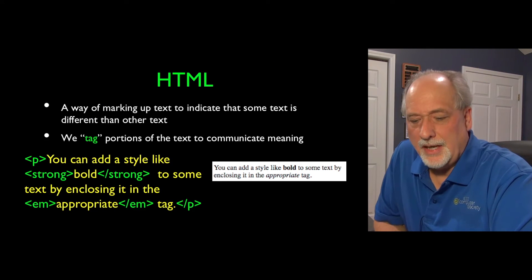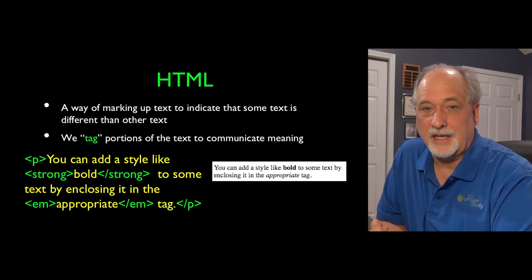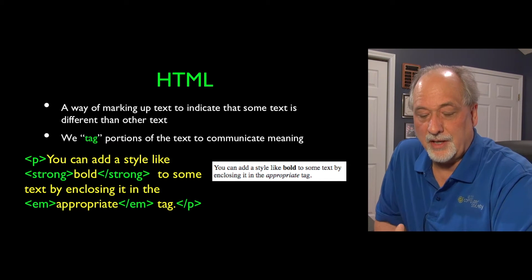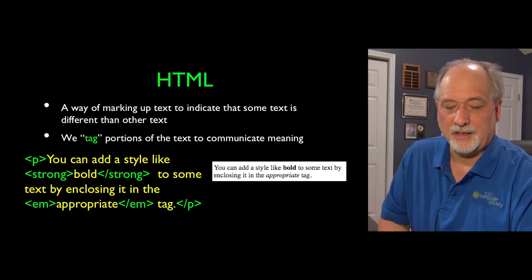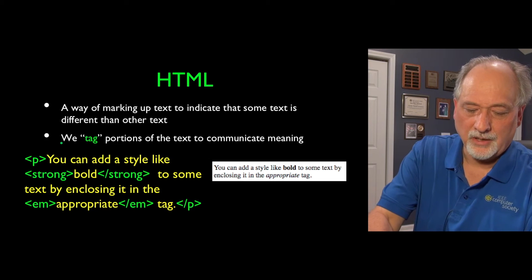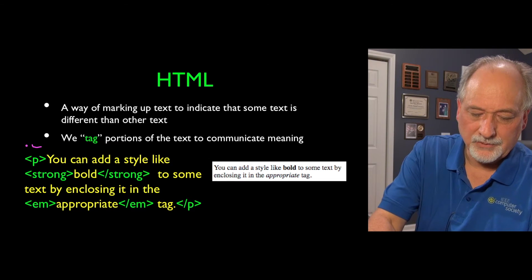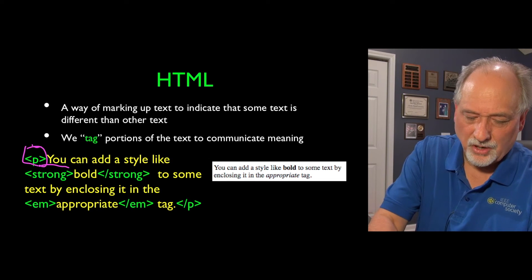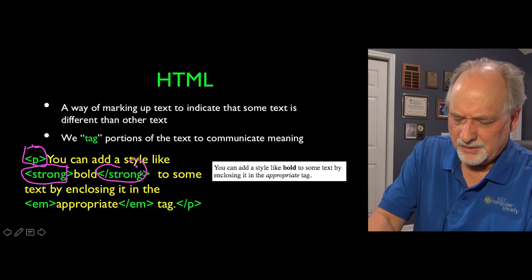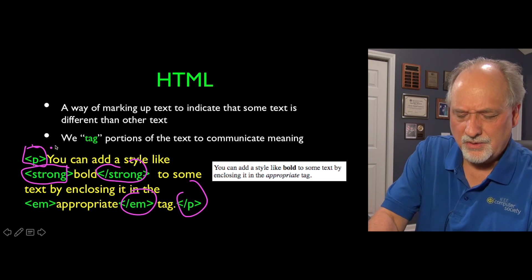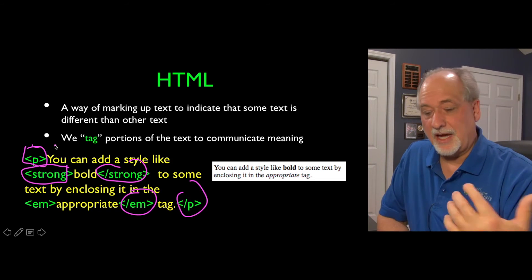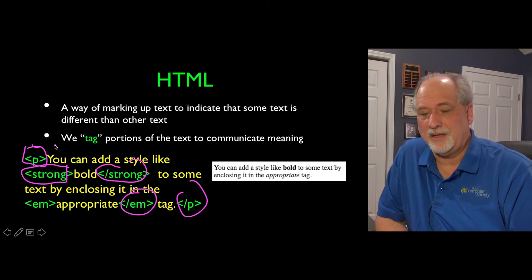HTML is just a technique of using some special characters — less than and greater than — to add tags to indicate what we want to see. Like the paragraph tag, the strong tag which makes things bold, the emphasize tag, and a paragraph tag. We have these tags and we just mark up; we're communicating meaning.